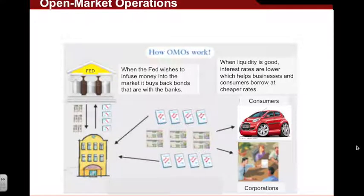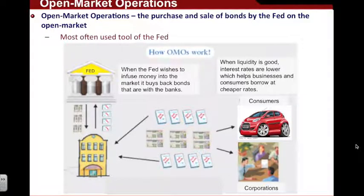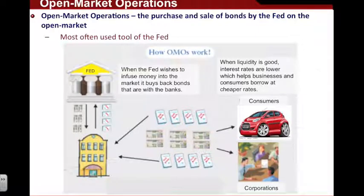This brings us to our first tool of the Federal Reserve's monetary policy — open market operations. Open market operations are one way the Federal Reserve can either increase or decrease the money supply to affect the economy. They are the most often used tool by the Federal Reserve. Almost every time the Fed meets to decide on monetary policy, they're discussing open market operations. It's called open market operations because the Fed is effectively buying or selling government bonds or other securities on the open market — not directly from the federal government.